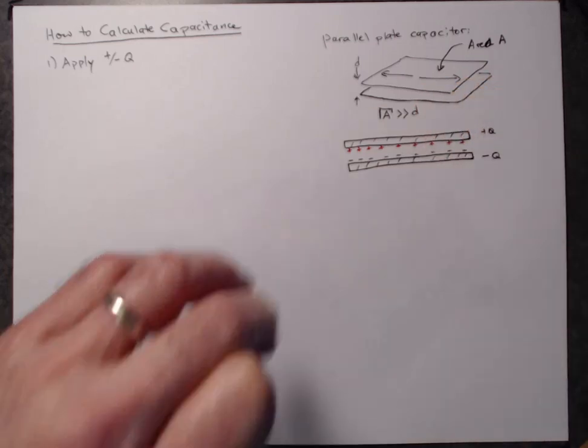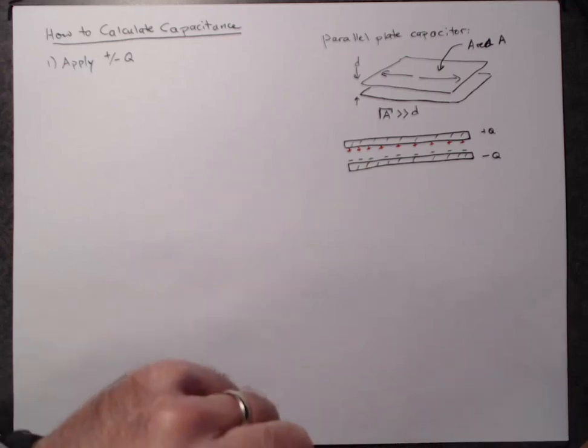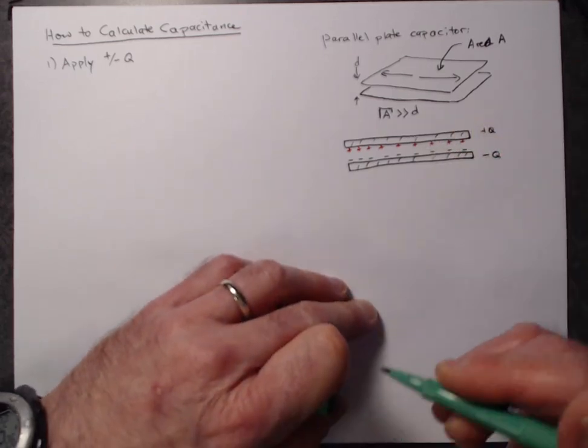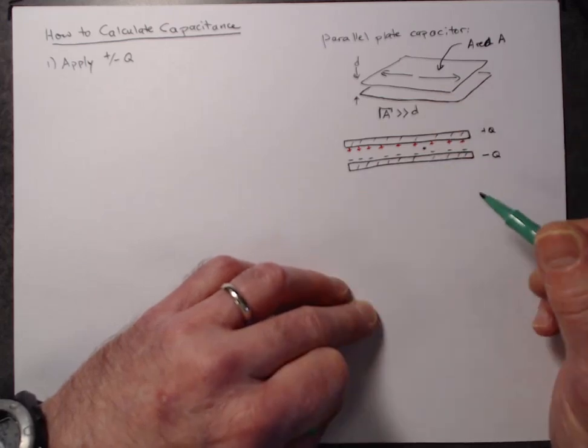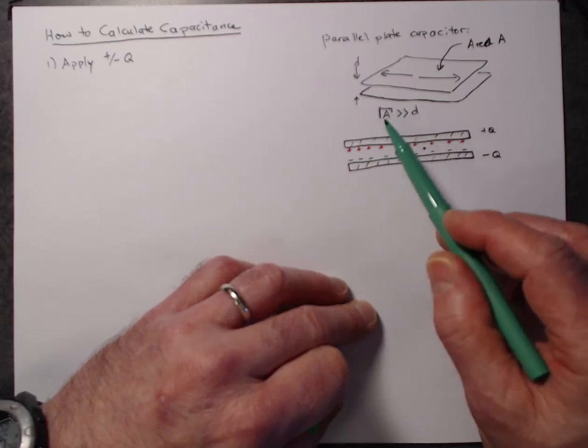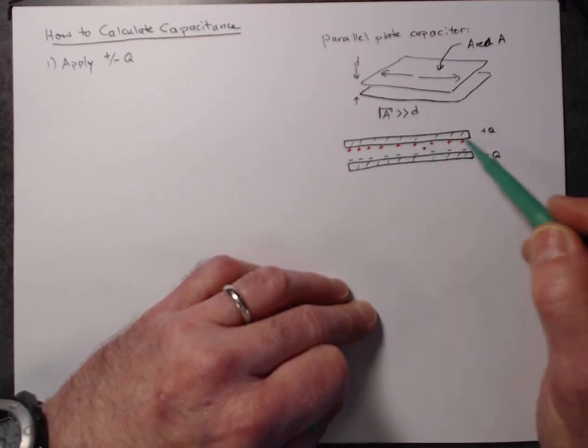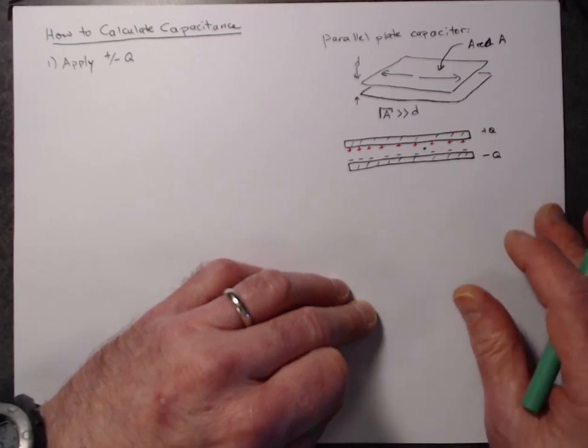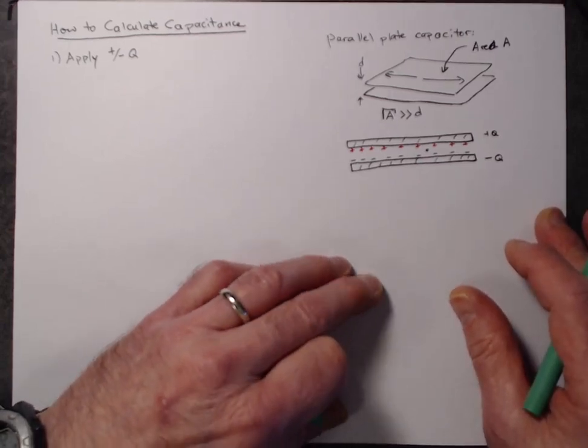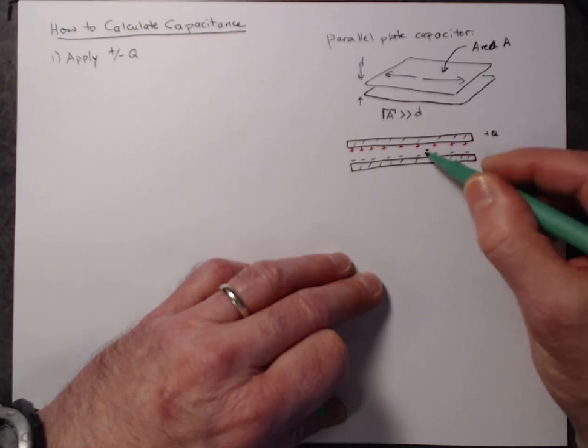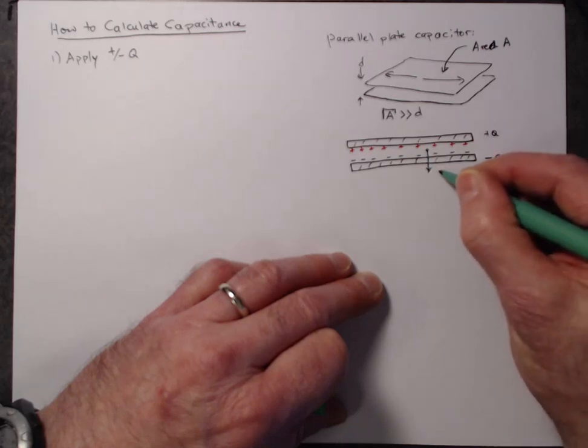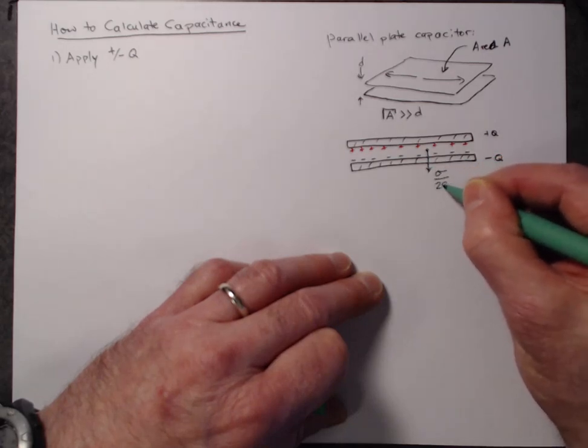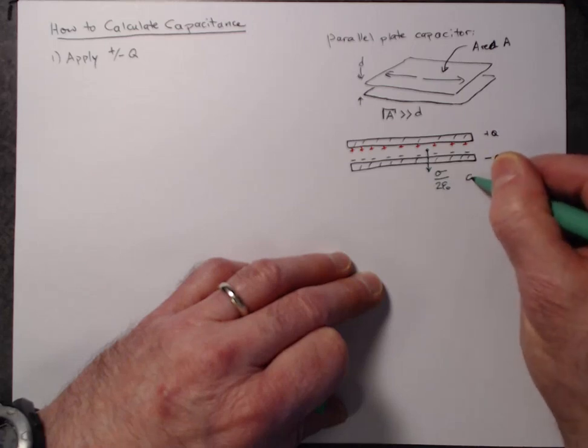We can think about the electric field due to each of the two sheets of charge. So the electric field due to the bottom sheet at some point here, we're treating it as an infinite sheet of charge because of this condition that we're assuming the two plates are quite close to each other. So as long as we're not close to the edges, we can treat this like an infinite sheet of charge. And so the field due to the bottom sheet, the minus charge would point downwards towards the bottom, and it would have magnitude sigma over two epsilon naught, where sigma is equal to the charge q divided by the area a.